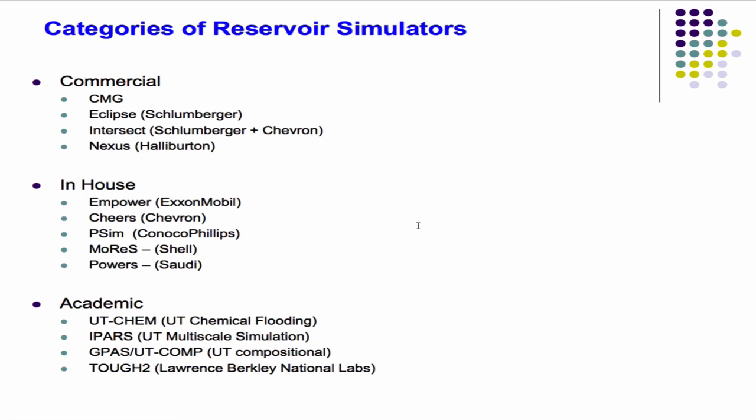There are a couple of others. Intersect is a joint project between Schlumberger and Chevron. On the first Monday after Thanksgiving — I think it's like the 29th of November — one of the Intersect developers who's a colleague of mine at Schlumberger is going to be here to give a graduate seminar. Right after this class, in that room over there, he'll be giving a seminar if you're interested.